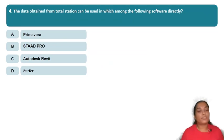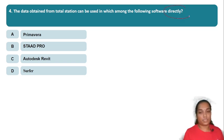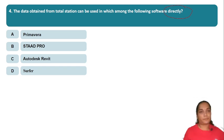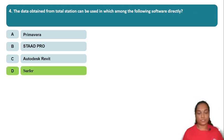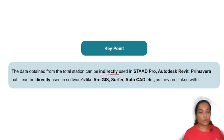The data obtained from a total station can be used directly in which software? The options include Primavera, StatPro, Autodesk Revit, and Surfer. The answer is Surfer — total station data can be used directly in Surfer software.